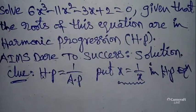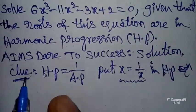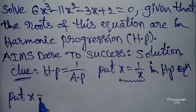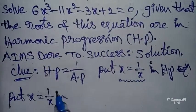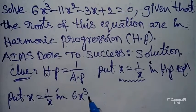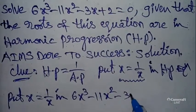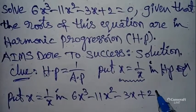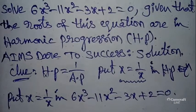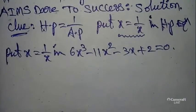Substitute x equals 1 by x in the given equation. The given equation is 6x³ minus 11x² minus 3x plus 2 equals 0. Substitute and simplify.